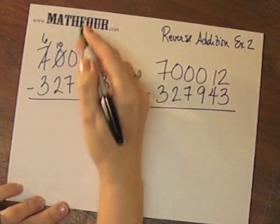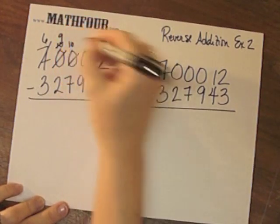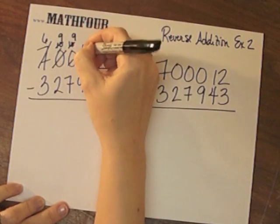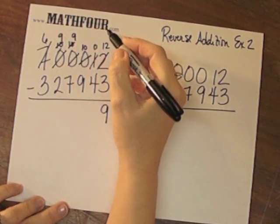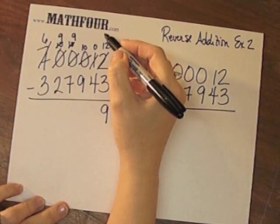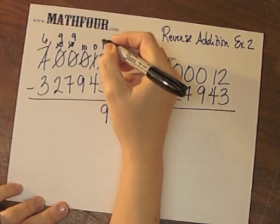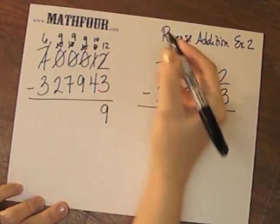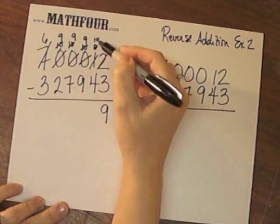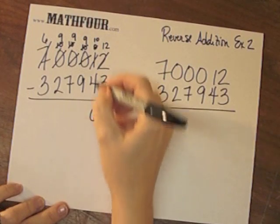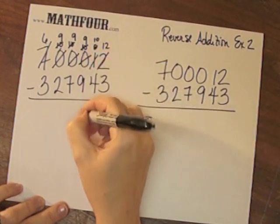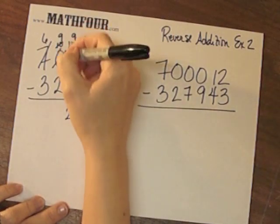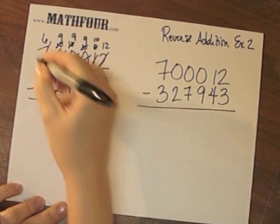I've got to borrow one for here, so this becomes a 9 and this becomes a 10. I'm borrowing one from here to give you a 9, so this becomes a 10. Borrowing again — this becomes a 9 and this becomes a 10. So 10 minus 4 is 6, 9 minus 9 is 0, 9 minus 7 is 2, 9 minus 2 is 7, and 6 minus 3 is 3.